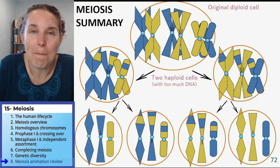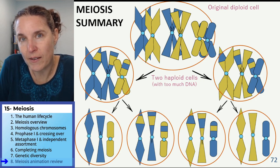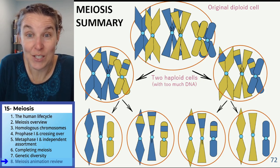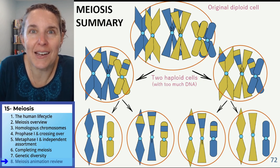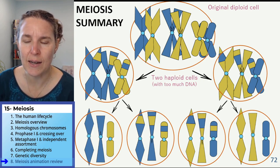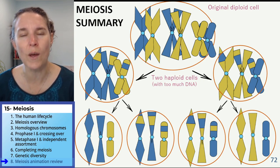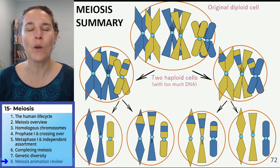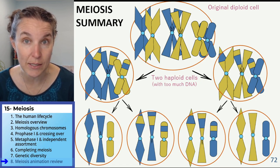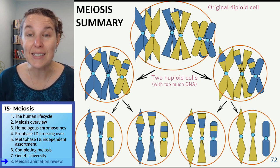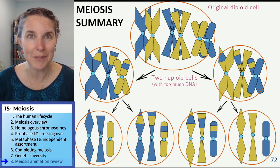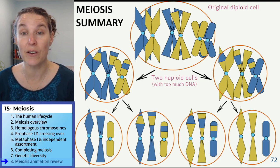We could make a copy of this entire PowerPoint and do a different alignment during metaphase one — line them up differently — and we would end up with different gametes. When we talk about independent assortment and the eight million possible gametes resulting from independent assortment, that does not consider crossing over. So crossing over means those eight million are actually not identical — they are likely very, very different.